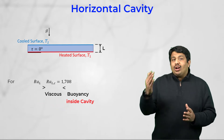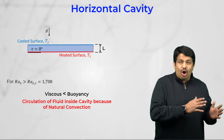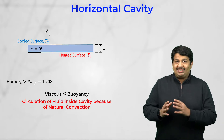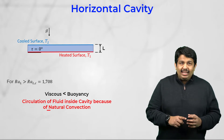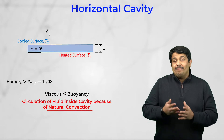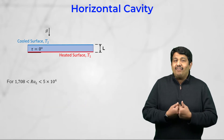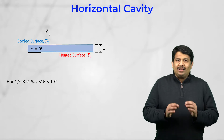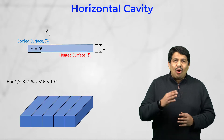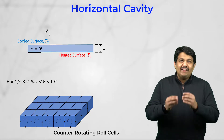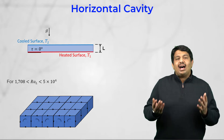As the Rayleigh number increases beyond the critical value of 1708, the buoyancy force due to the density difference between the hot and cold fluid regions can overcome the viscous resistance experienced by the fluid. The fluid begins to circulate inside the cavity and the overall heat transfer is augmented because of natural convection. For modest Rayleigh numbers ranging between 7008 and 50,000, the motion of the fluid creates a pattern of uniformly spaced counter-rotating roll cells within the cavity. This uniform pattern of fluid motion transitions to turbulence at larger Rayleigh numbers.